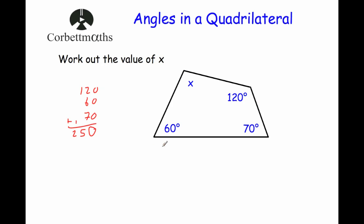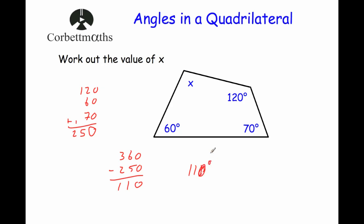Now we're going to take that away from 360. So 360 minus 250: 0 take away 0 is 0; 6 take away 5 is 1; and 3 take away 2 is 1. So angle X is equal to 110 degrees.